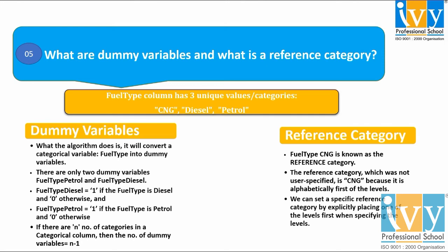Fuel type diesel is encoded as 1 when the vehicle is diesel, and 0 otherwise. Fuel type petrol is encoded as 1 when the vehicle is petrol, and 0 otherwise. In general, if there are n categories in a categorical column, there are n minus 1 dummy variables. The remaining category, fuel type CNG, is known as the reference category — it is chosen as reference because it comes first alphabetically among the levels. You can set a specific reference category by explicitly placing it first when specifying the levels.